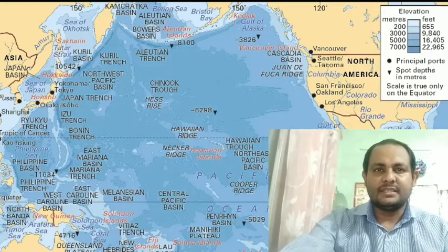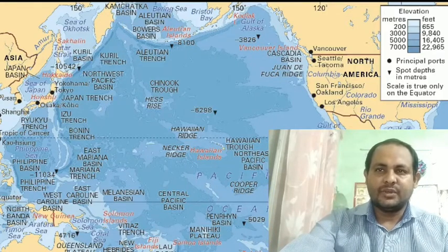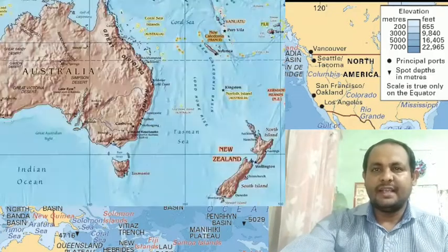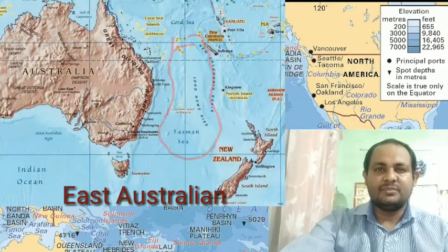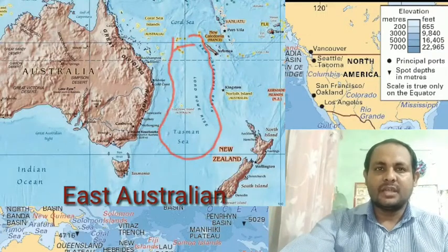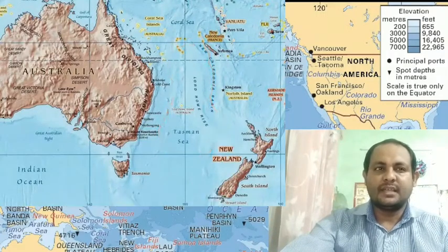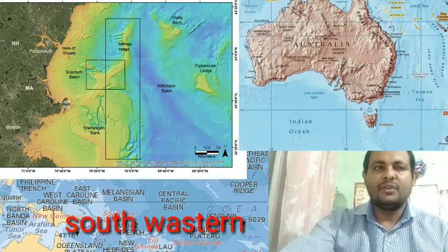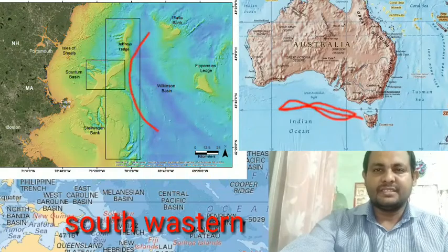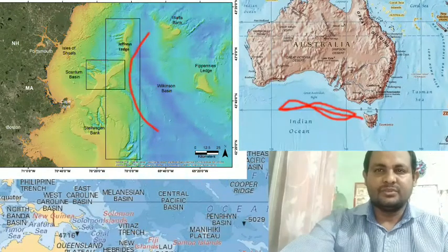Next is the East Australian Basin, situated between the east coast of Australia and the New Zealand Ridge, with an average depth of more than 5,000 meters. The South Australian Basin, also known as the Jeffrey Basin, is located to the southeast of Australia, with an average depth of 5,000 meters.